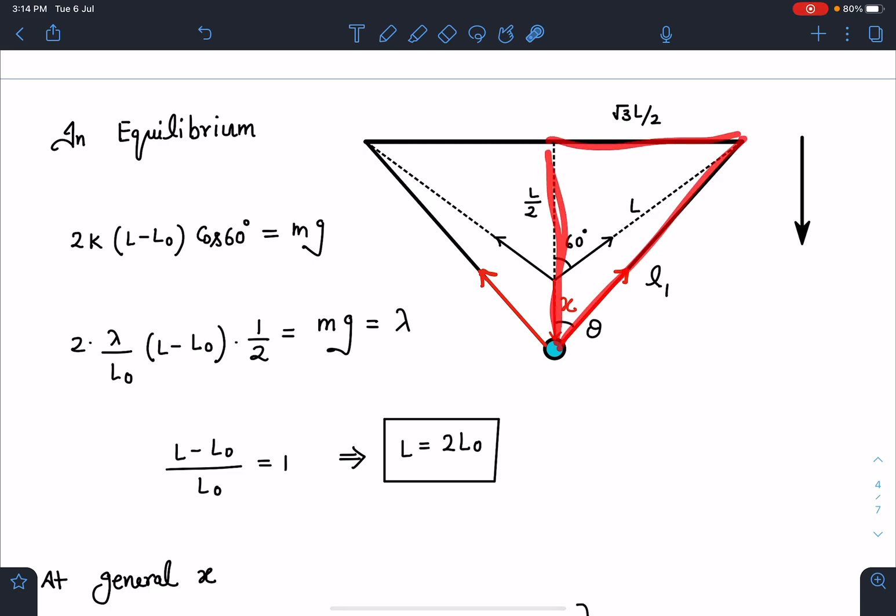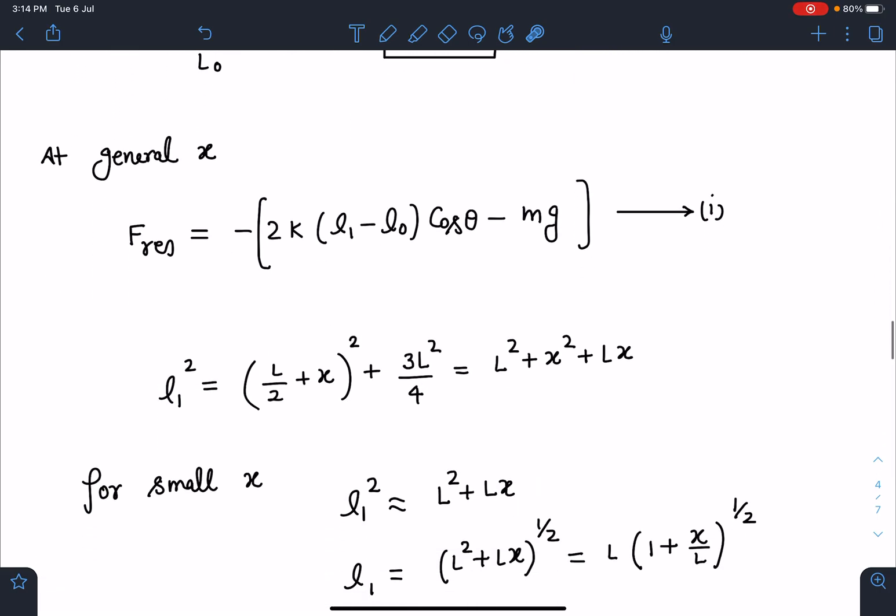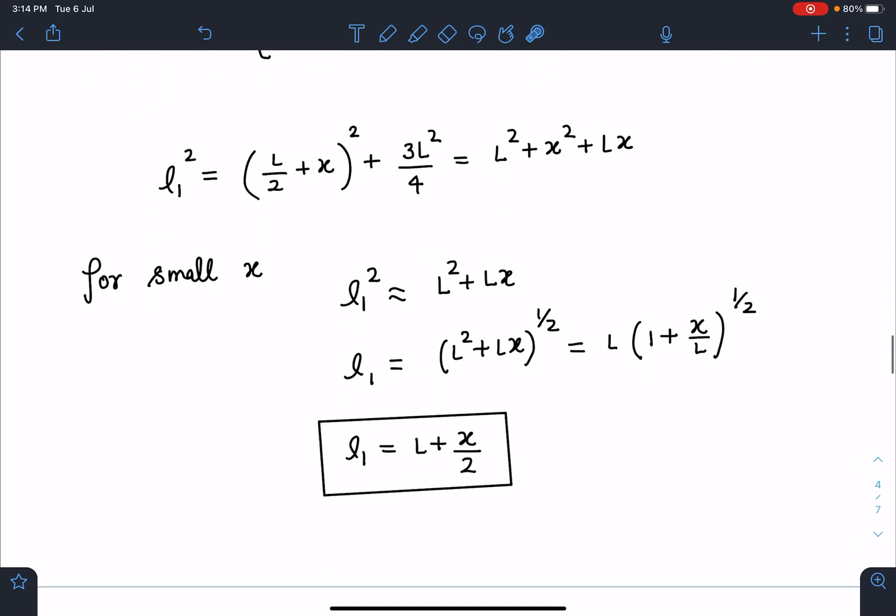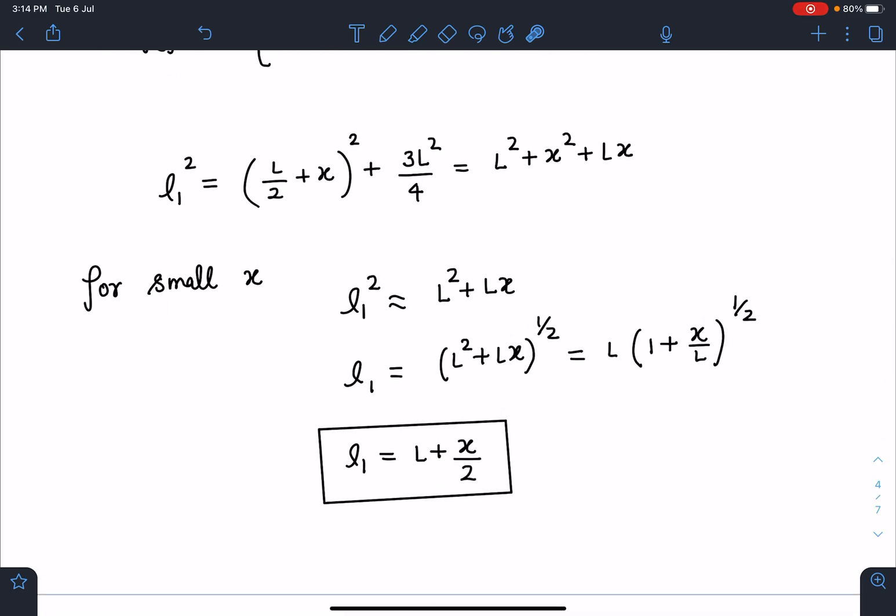You can see in this diagram if I use Pythagoras theorem here, L₁² = (L/2 + x)² + (√3L/2)². When I use approximation, I'll ignore these higher order terms, so my L₁² comes as L² + Lx, and further I can use binomial approximation here. So L₁ comes as L + x/2 approximately.